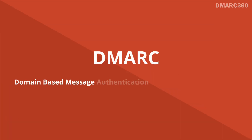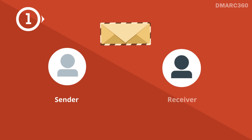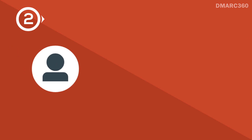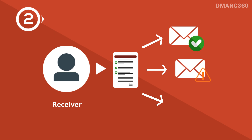DMARC, or Domain-Based Message Authentication, Reporting and Conformance, is a framework designed for two things. One, allow the email sender to tell the receiver what to do in case of a forged email. Two, allow the email receiver to send back reports on the authentication checks and the action it applied on the emails.